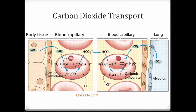Carbonic acid then dissociates into bicarbonate ions and hydrogen ions. The bicarbonate ions diffuse out into the plasma. Since they have a negative charge, they easily dissolve in the polar water of the plasma. But that means we're adding negatives to the plasma, so we need to keep charges neutralized. For every bicarbonate that moves out, a chloride ion moves in — since chloride also has a negative charge. This is called the chloride shift; it keeps the charge of the plasma the same.